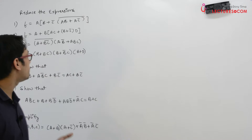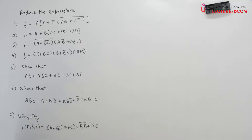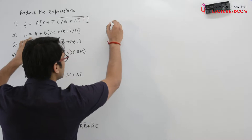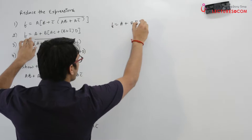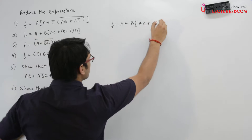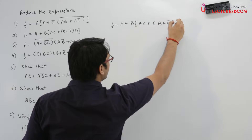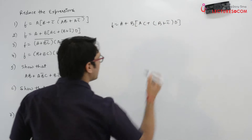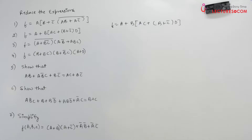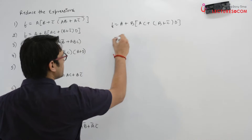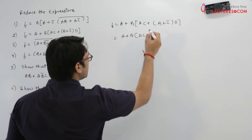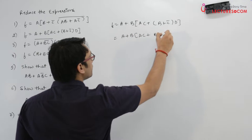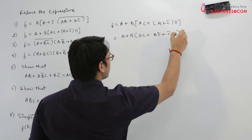In the previous session we solved the first question; now let us try to solve the second question. It says if we have the function f = (a+b)(ac+b) + c'd. We have to reduce this expression. Let us try to open the bracket, so we will get a+b multiplied by ac+bd+c'd.